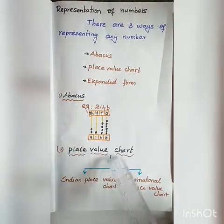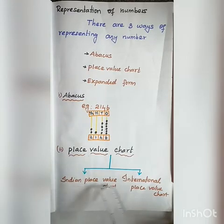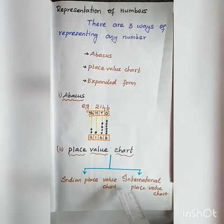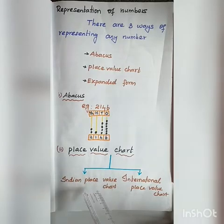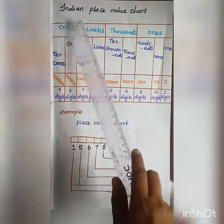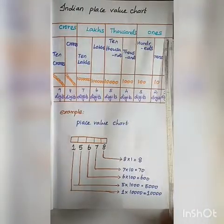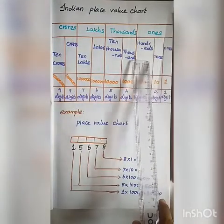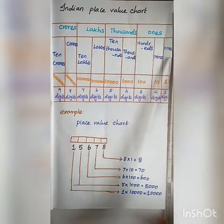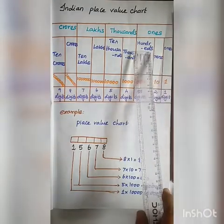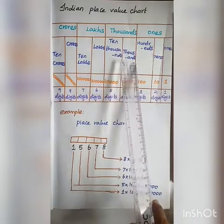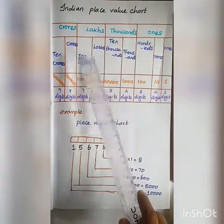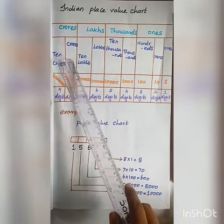Next: place value chart. There are 2 types: the Indian place value chart and the international place value chart. In this chapter we discuss the Indian place value chart. In the 1's group you have 3 places: 1's, 10's, 100's. In the 1000's group, 2 places: 1000's and 10,000's. In the lakhs group, 2 places: lakhs and 10 lakhs. In the crores group: crores and 10 crores.